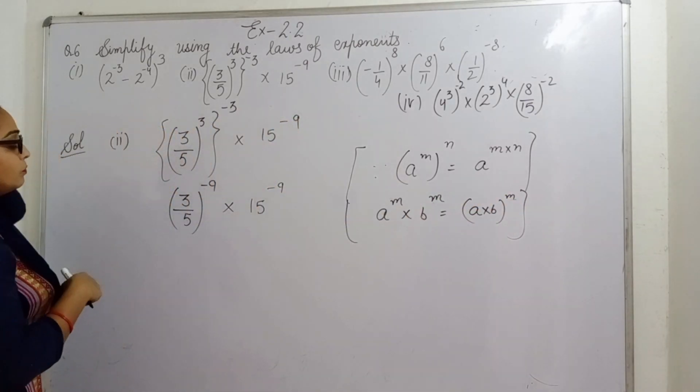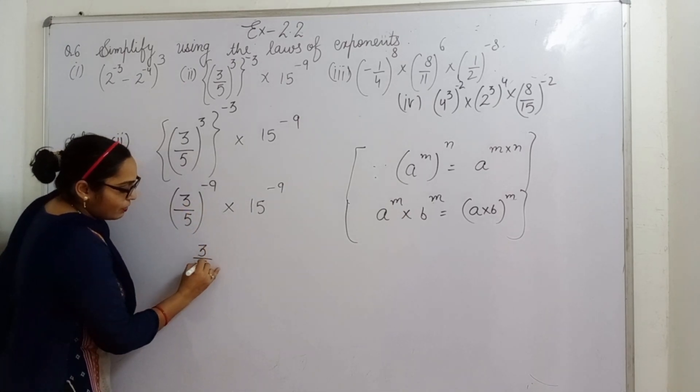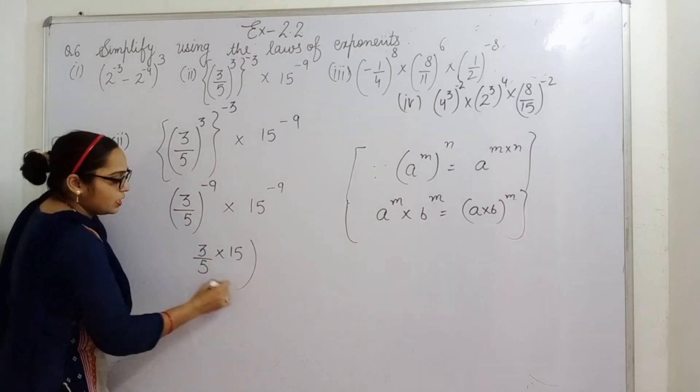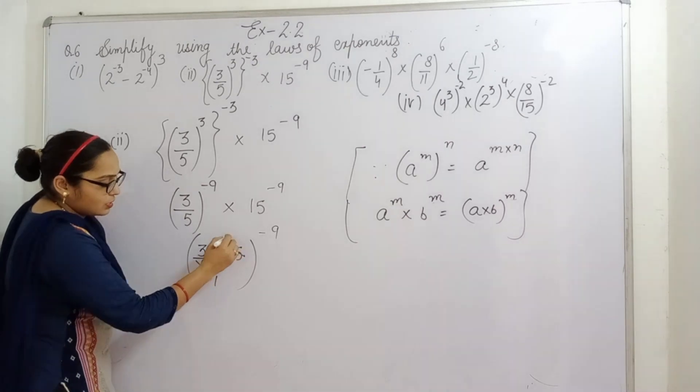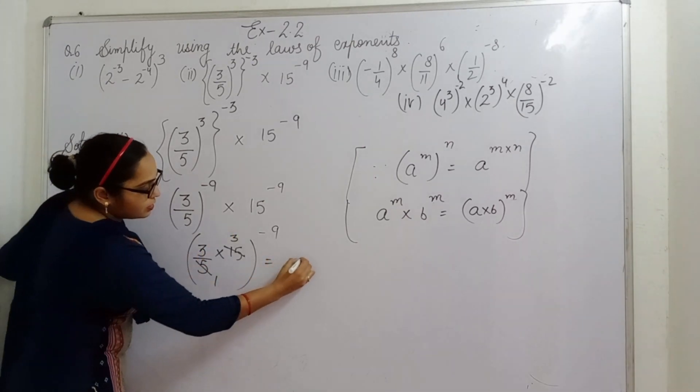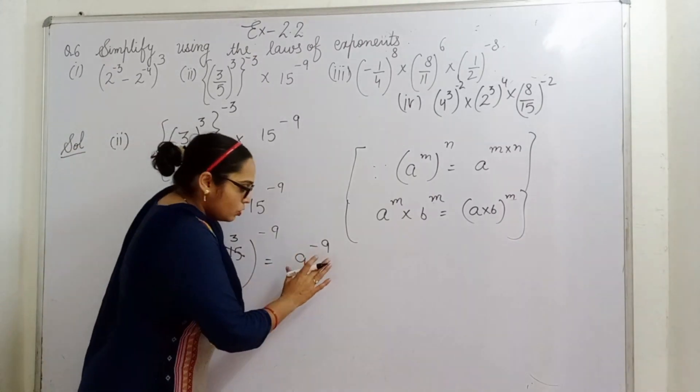Now it is three by five times 15, now power is minus nine. Now it is cancelled: three times five is fifteen, so three by five times fifteen equals nine, raised to power minus nine.